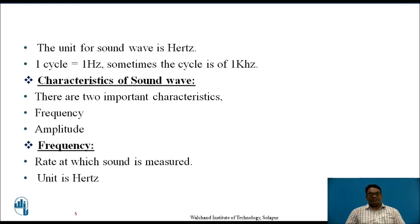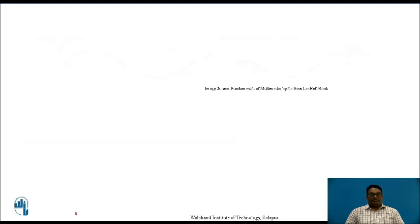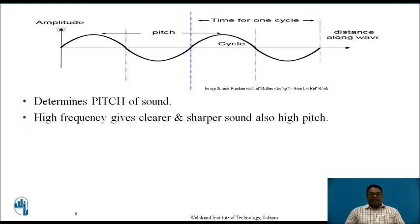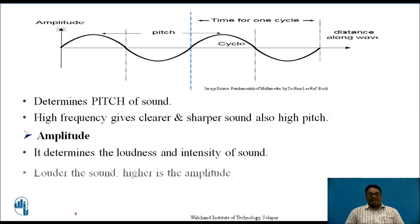There are two important characteristics of a sound wave: first, frequency, and second, amplitude. Frequency is defined as the rate at which sound is measured and the unit of frequency is hertz. The y-axis generally denotes the amplitude and the x-axis generally denotes the distance along the wave. The distance between two crests generally denotes the pitch of the sound. High frequencies are generally clearer and sharper, having a high pitch. Amplitude is generally defined in terms of loudness and intensity of a sound.